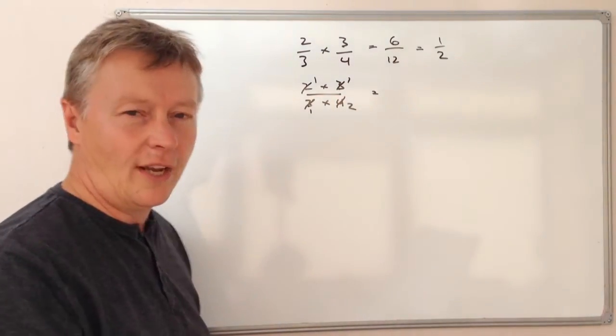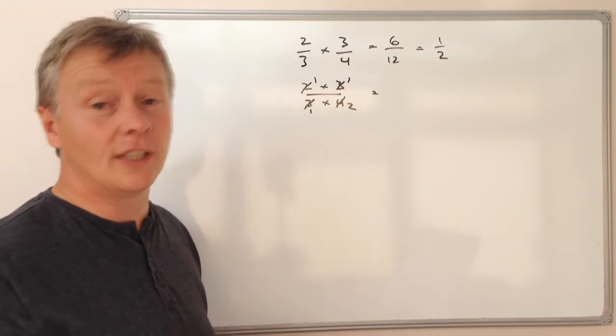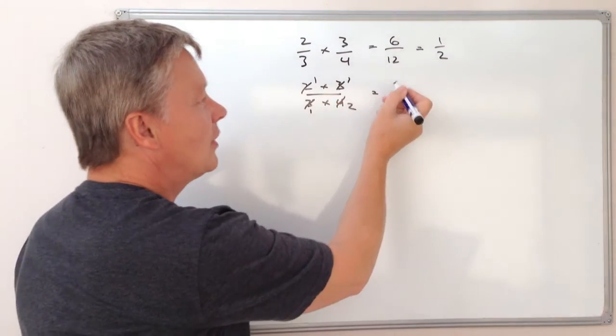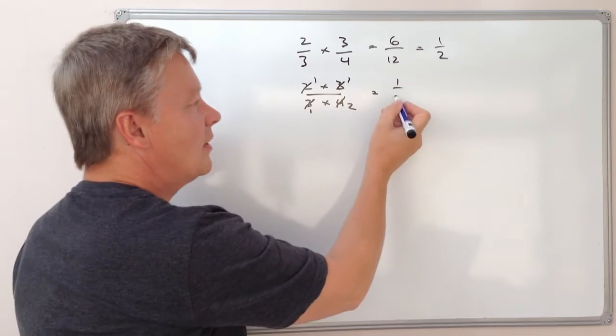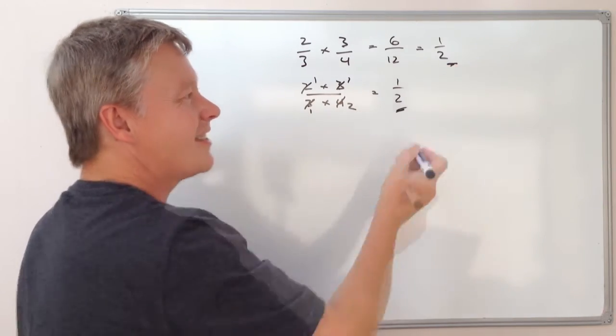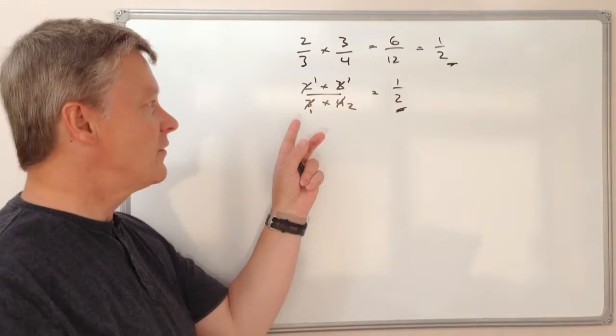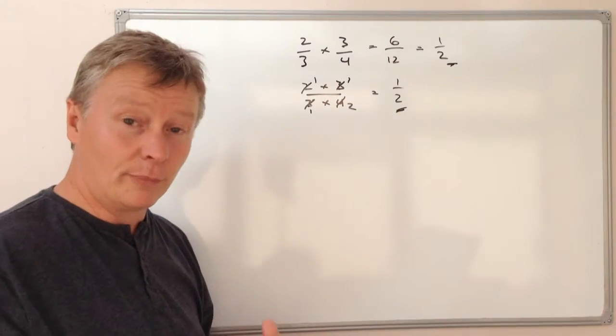So now when I multiply out, my numbers are a little bit smaller, a little bit easier to deal with. So I've got 1 times 1 is 1, and 1 times 2 is 2. I'm still going to get the same answer, but it just means that I've dealt with the reduction a little bit sooner on.